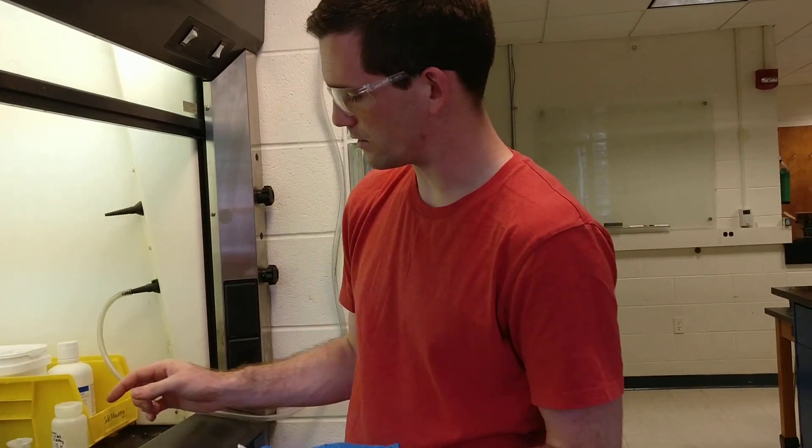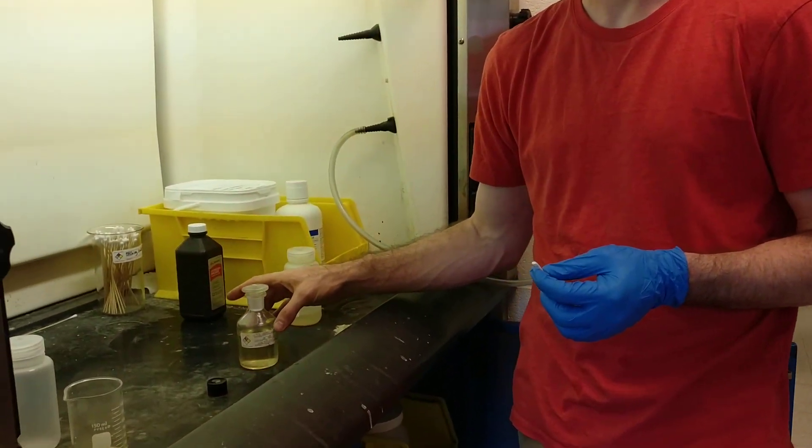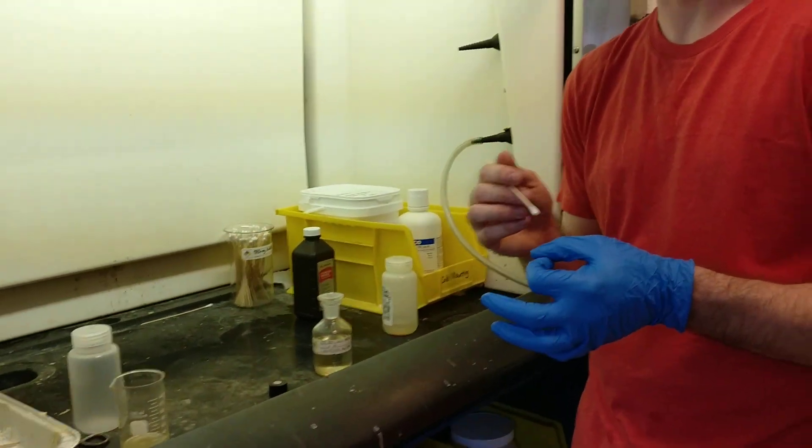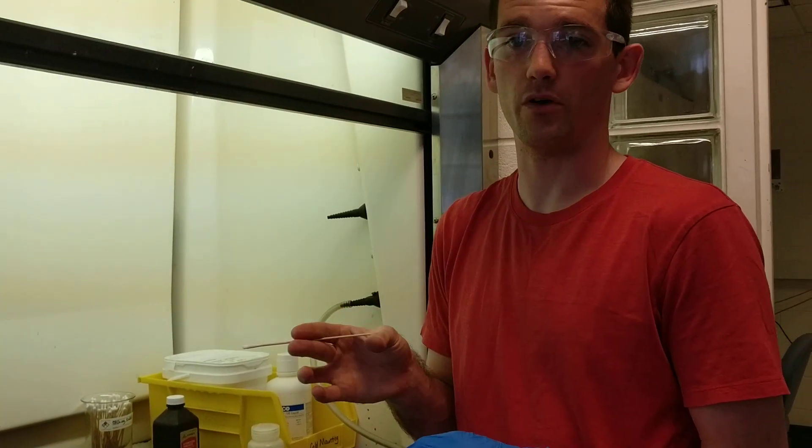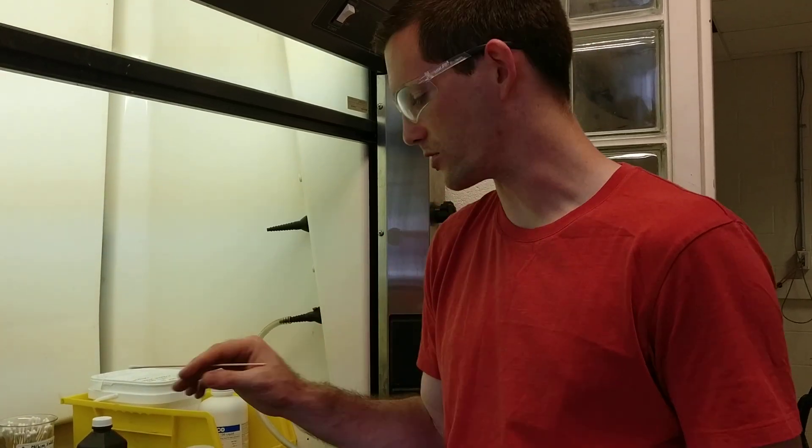I'm loosening the swab because my etch is mostly alcohol, and as I swab, if that alcohol evaporates, I will stain the sample, and you'll see rainbow colors in the optical microscope if that happens.